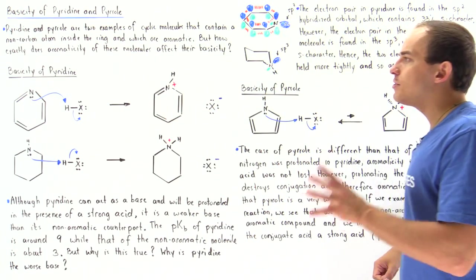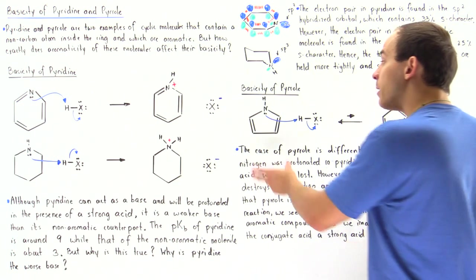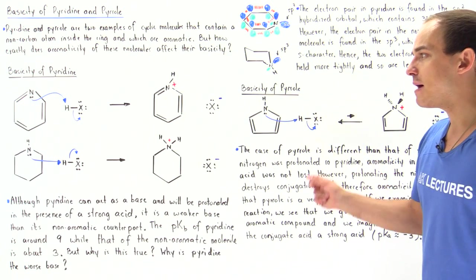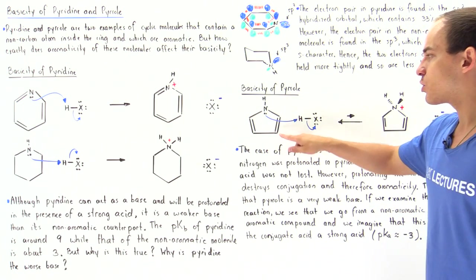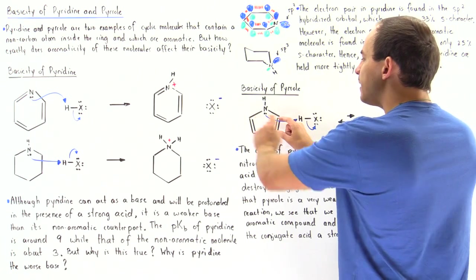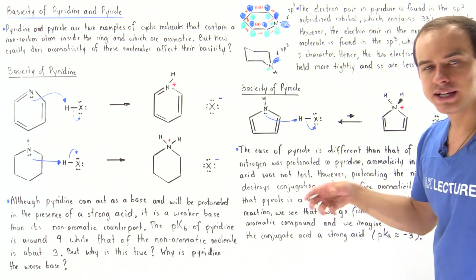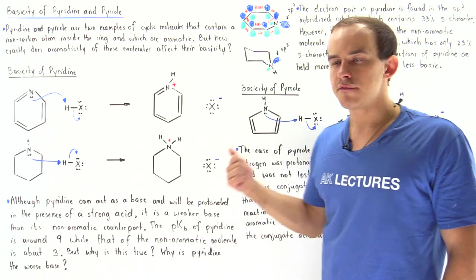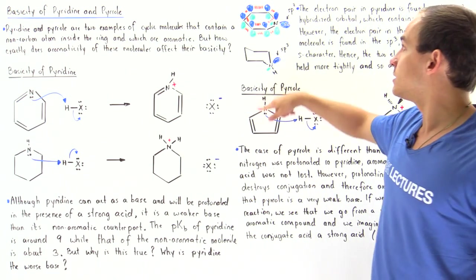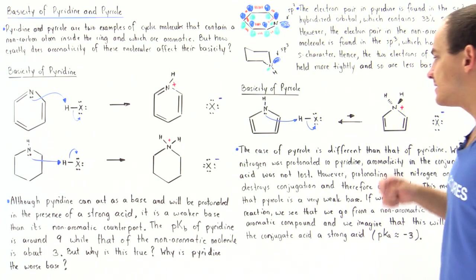Now what about the basicity of pyrrole? Pyrrole has a five-membered ring with four carbons, one nitrogen, and two pi bonds. This lone pair of electrons on the nitrogen is found in the p orbital of that nitrogen — unlike pyridine, it is in fact in the pi bonding system.